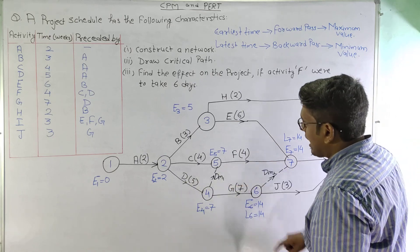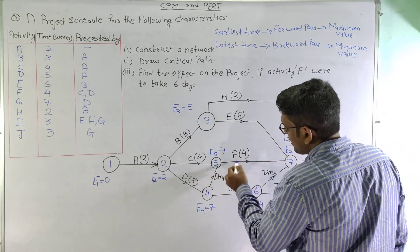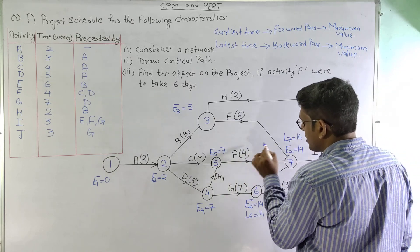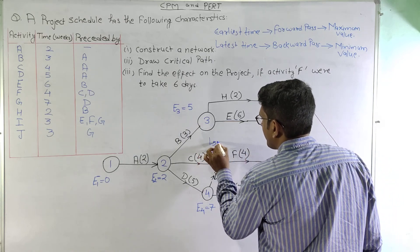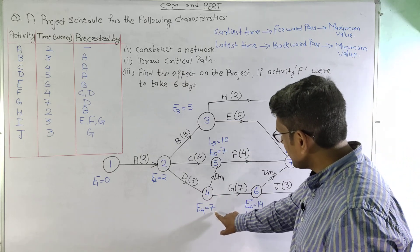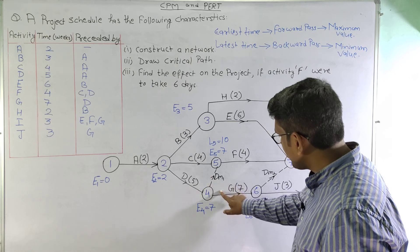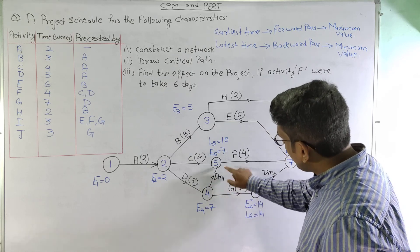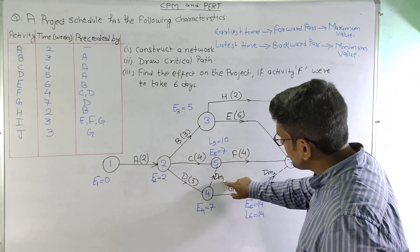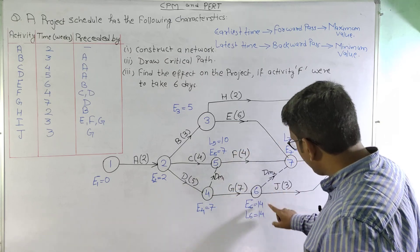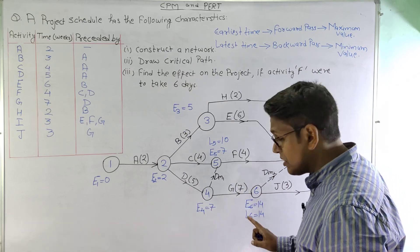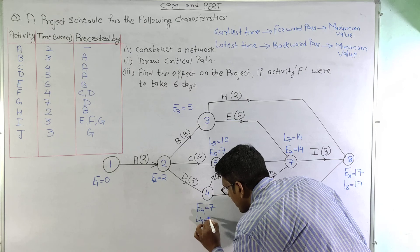At node 5, only a single outgoing arrow: 14 − 4 = 10, so L5 = 10. At node 4, two outgoing activities: from one path 10 − 0 (dummy) = 10, and from the other 14 − 7 = 7. We select the minimum, so L4 = 7.